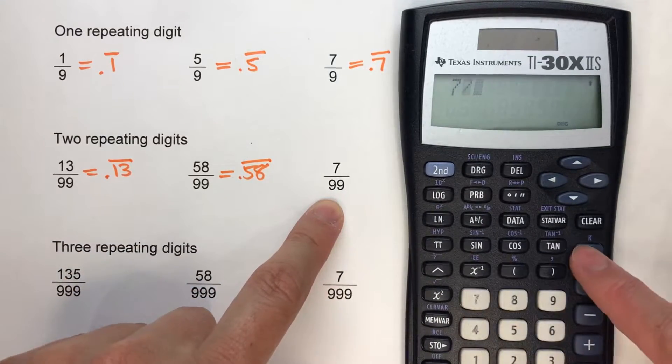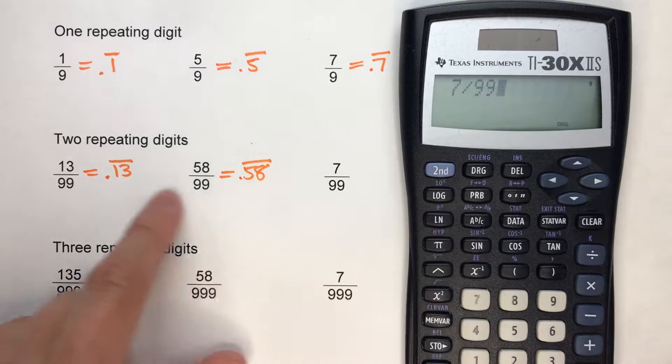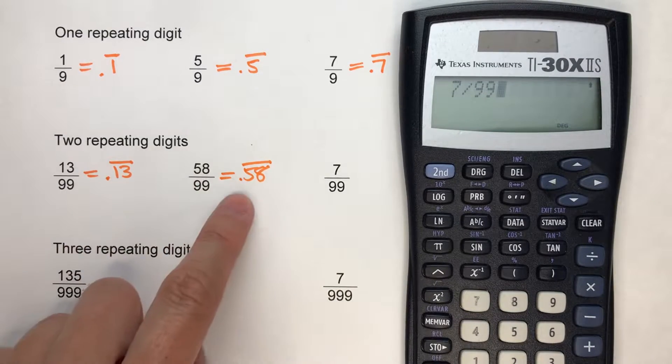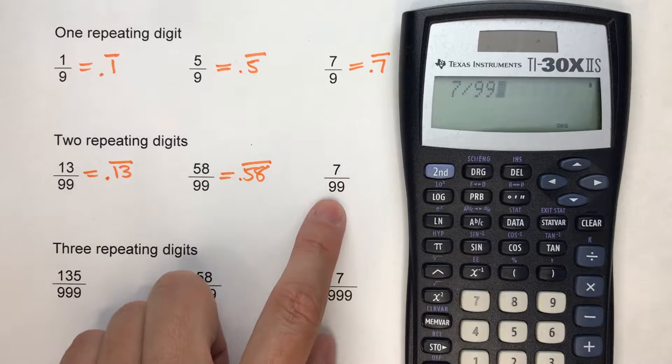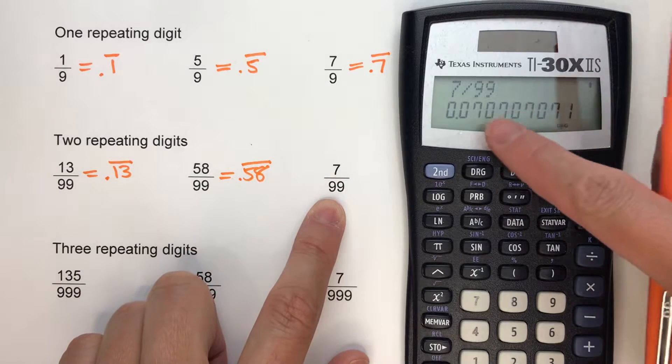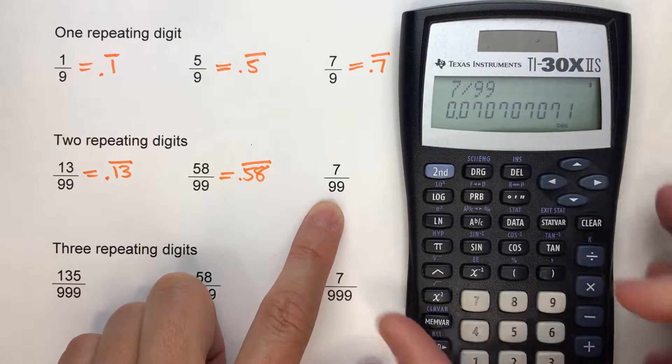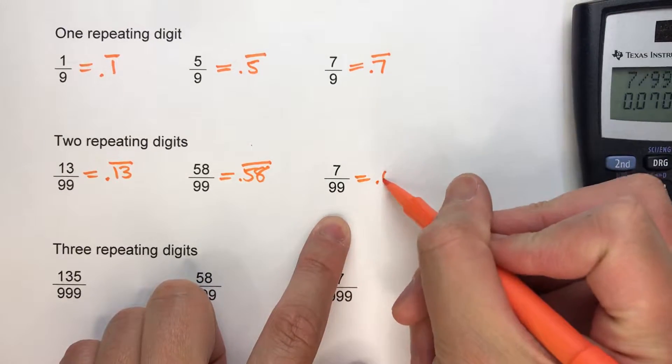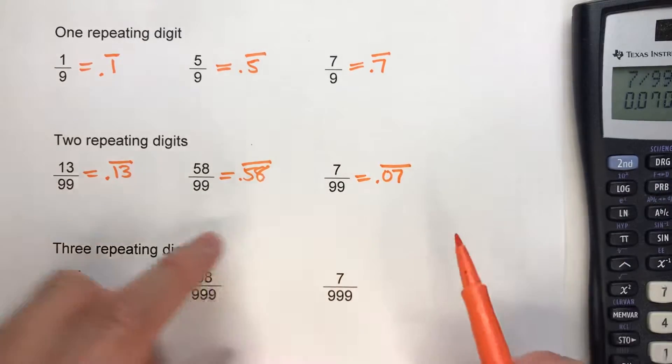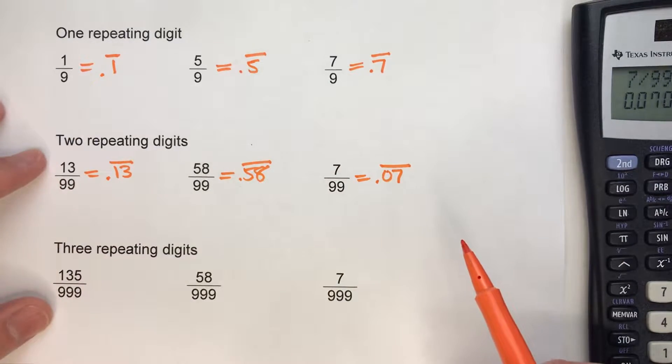And 7/99. Now this one's a little interesting. But remember, we've got two digits repeating. So when we have a single digit as my numerator, look what ends up repeating. 070707. So when you have 99ths as your denominator, you've got two repeating digits.